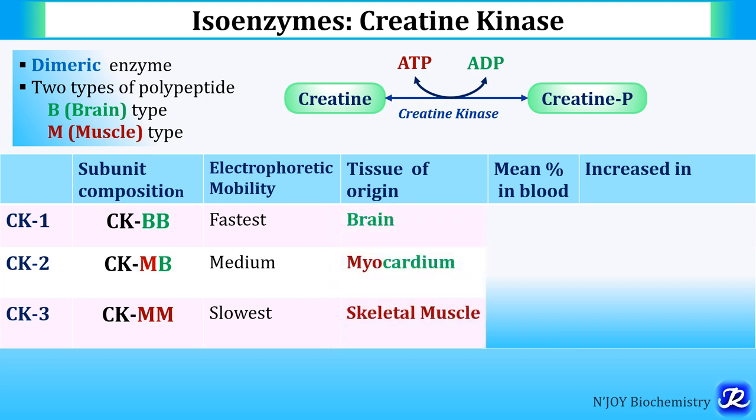Tissue of origin: CK1 (CKBB) originates from the brain. CK2 (CKMB) — M for myocardium, B for brain — is present in the myocardium. CK3 (CKMM) — both M — is present in skeletal muscle. In blood, CK3 is present at 90% concentration, while CK1 is 1–5% and CK2 is 5–9%.